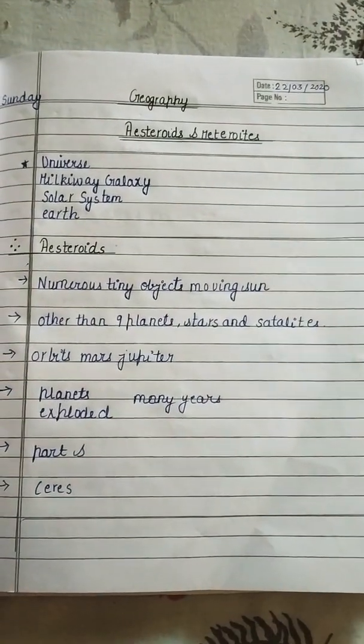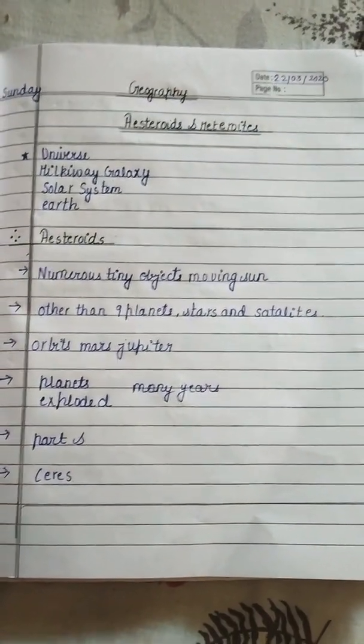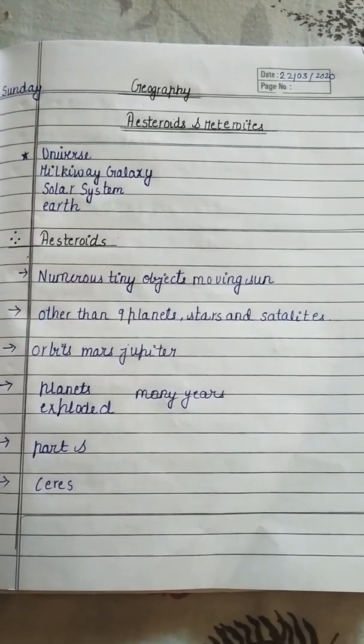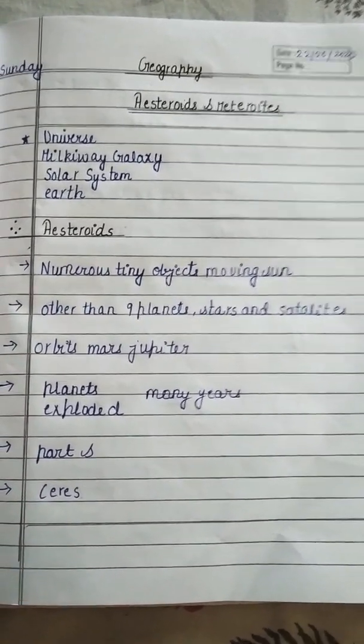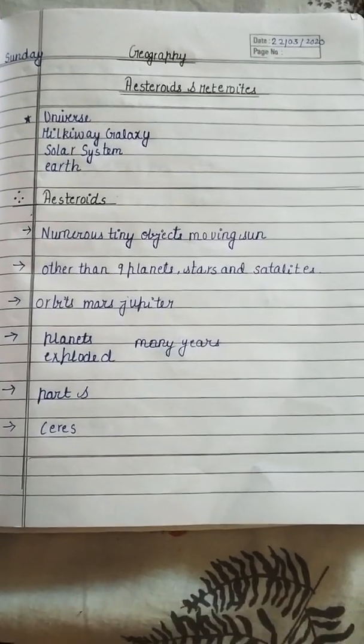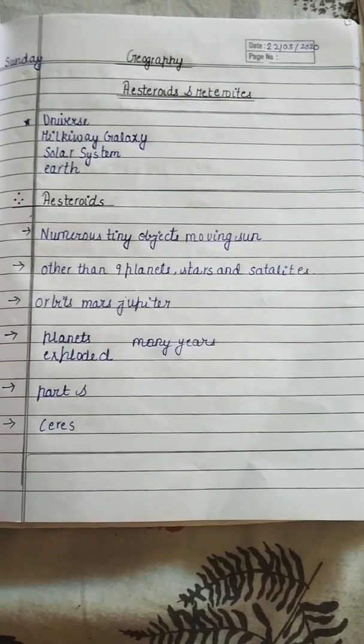So we move to asteroids and meteoroids from inside the Earth. Universe consists of Milky Way Galaxy, Milky Way Galaxy consists of Solar System, Solar System consists of Earth.